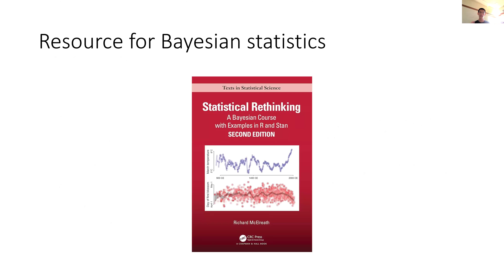Once we fit a transmission model to data, there are lots of things we can do — evaluate potential interventions such as vaccines or masking, and forecast future infections. Today we'll be going over a Bayesian approach to do this type of model fitting. Before we go into specific examples, we need to talk about the basic mechanics of doing Bayesian inference. I highly recommend the book Statistical Rethinking as a great introduction to applied Bayesian modeling.